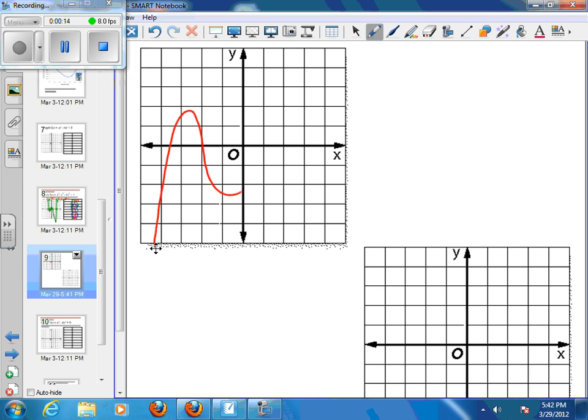If I had a graph that was a cubic graph, we would have two places where we change directions, and when we change directions, that's where we have our maxima or our minima.